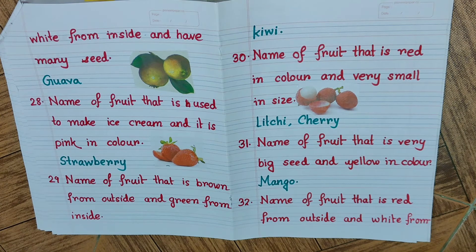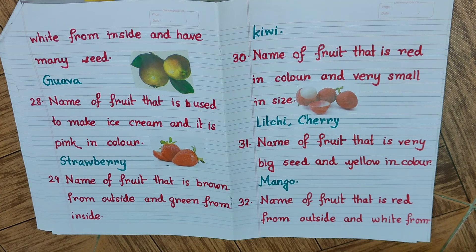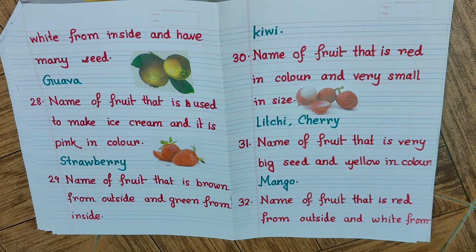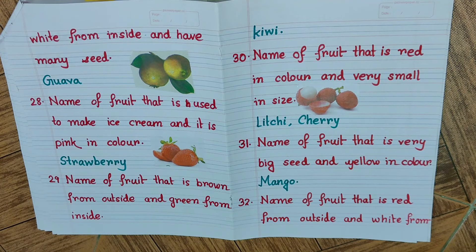Question number thirty: name a fruit that is red in color and very small in size. We have provided two such fruits — one is lychee, another one is cherry. Question number thirty-one: name a fruit that has a very big seed and is yellow in color. Obviously we are talking about mango.